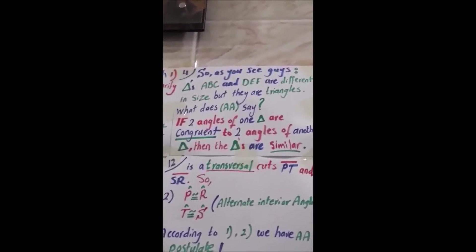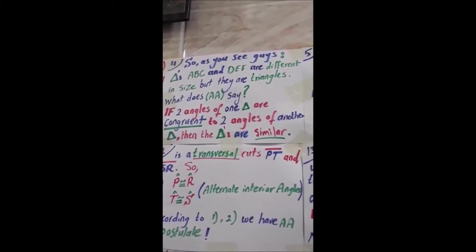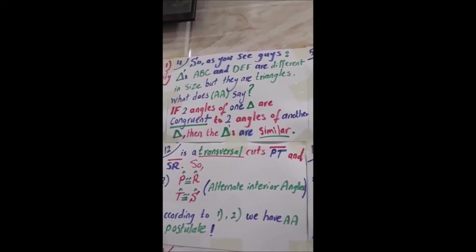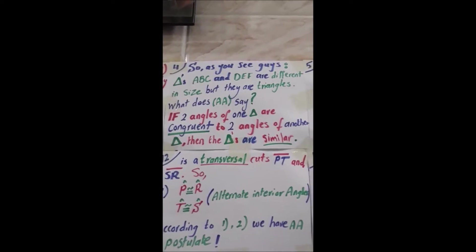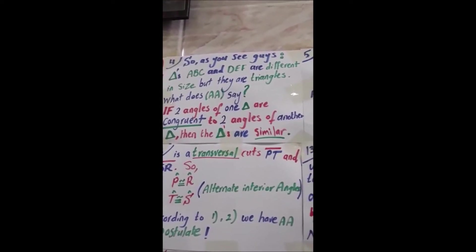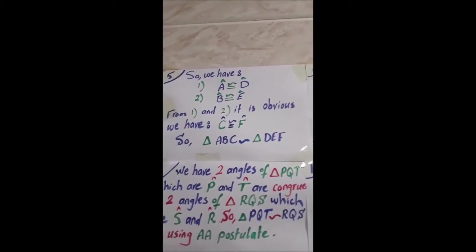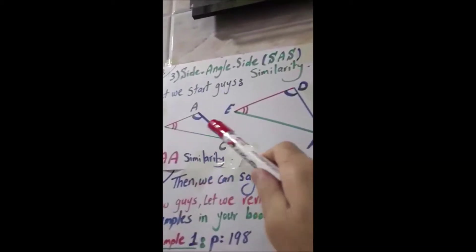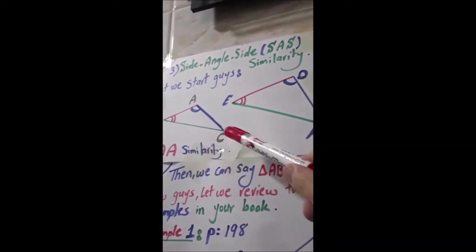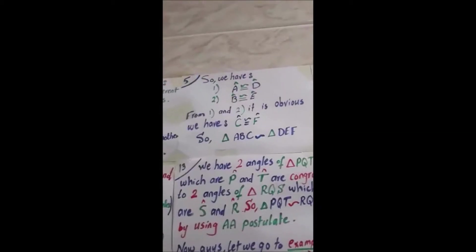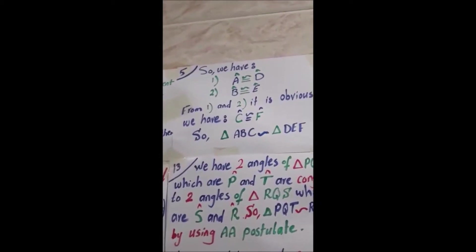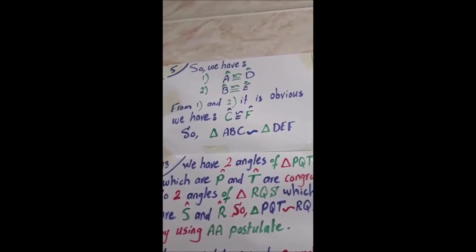What does angle-angle similarity say? If two angles of one triangle are congruent to two angles of another triangle, then these triangles are similar. In triangles ABC and DEF, angles A and D are congruent, angles B and E are congruent. It is obvious that angle C will also be congruent to angle F. So these two triangles are similar.